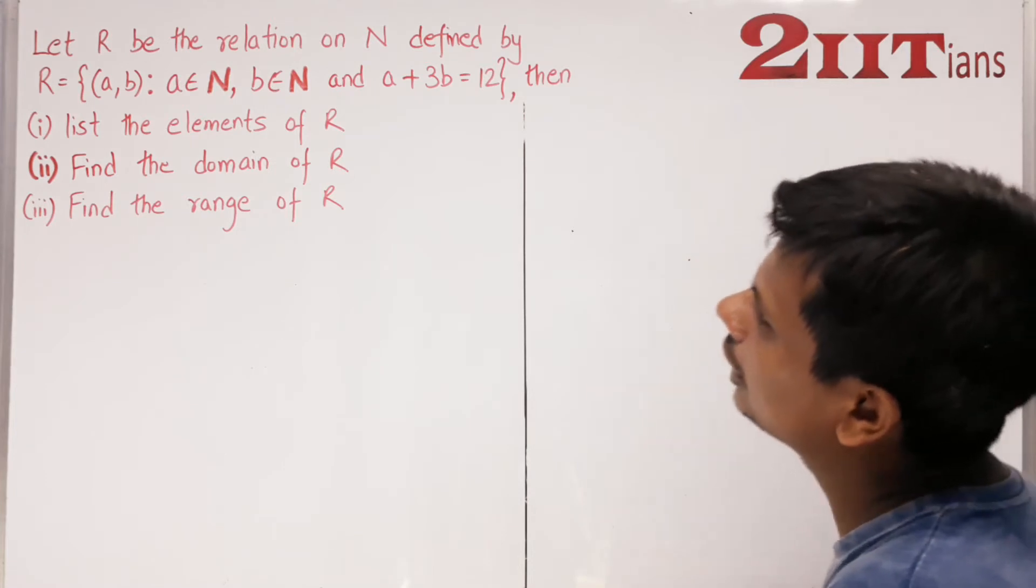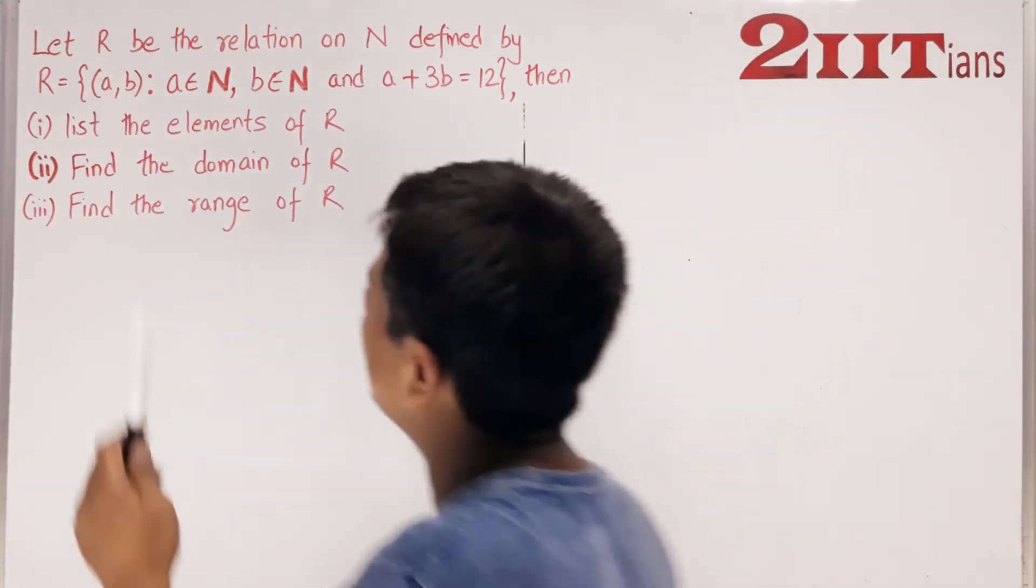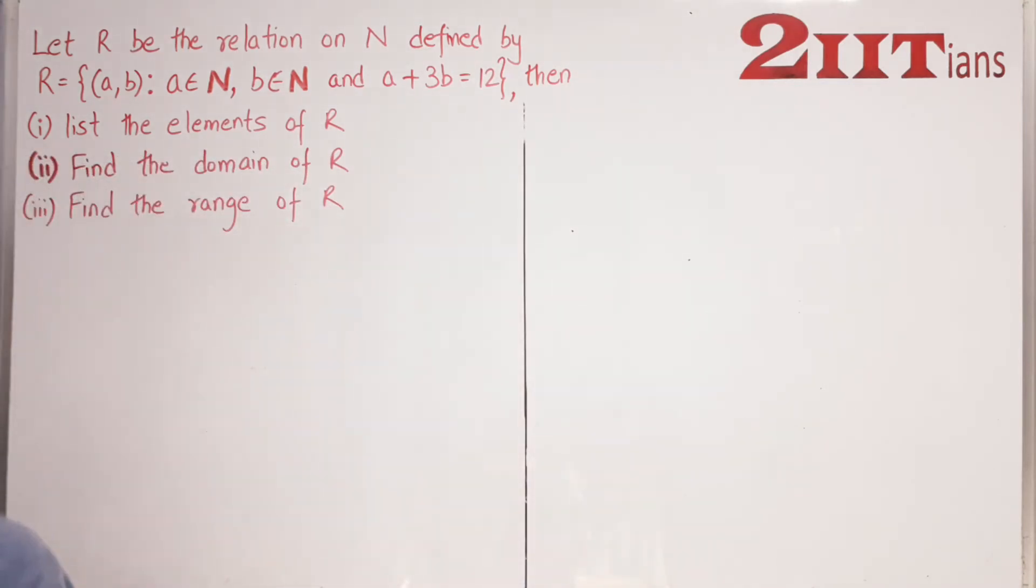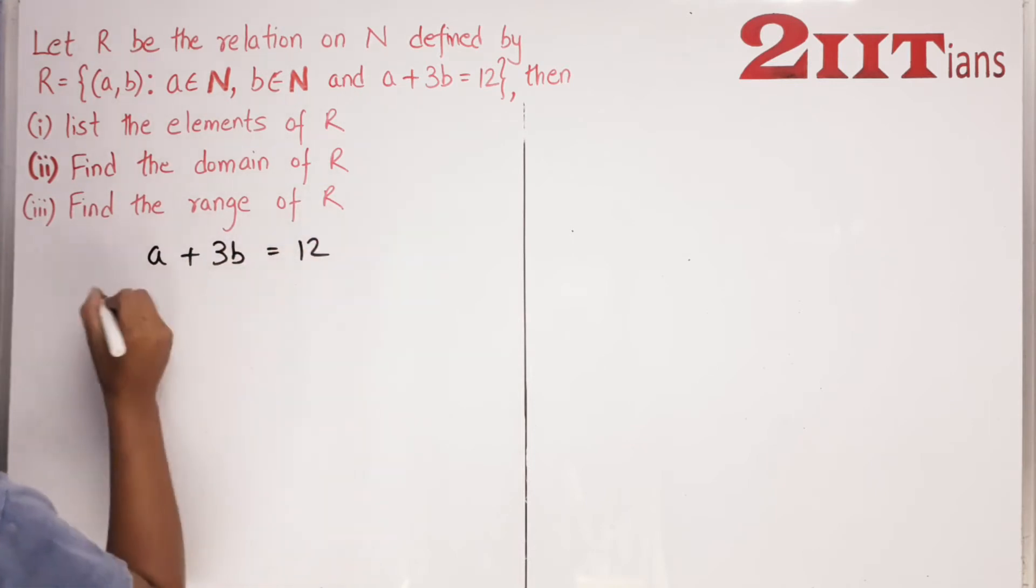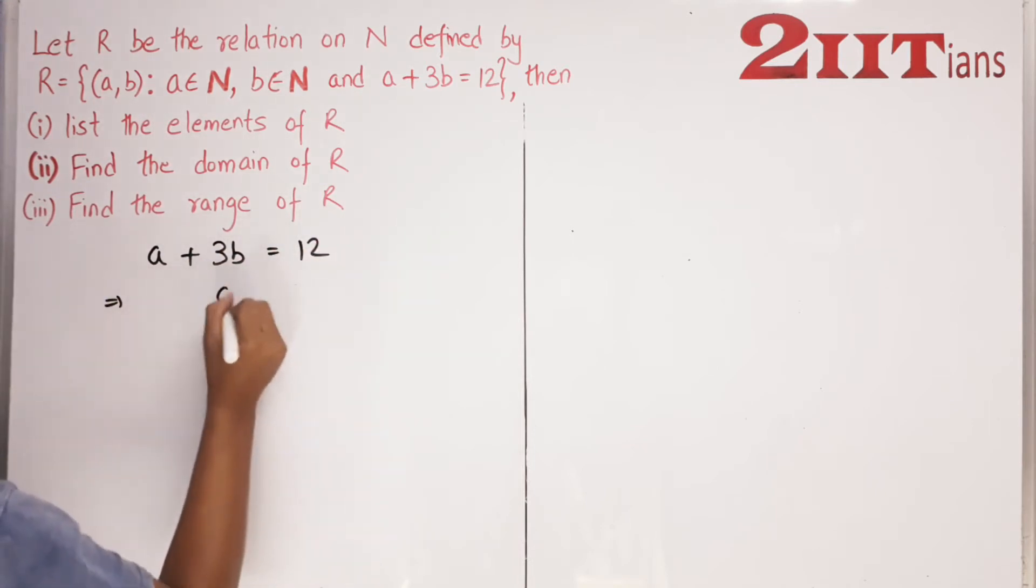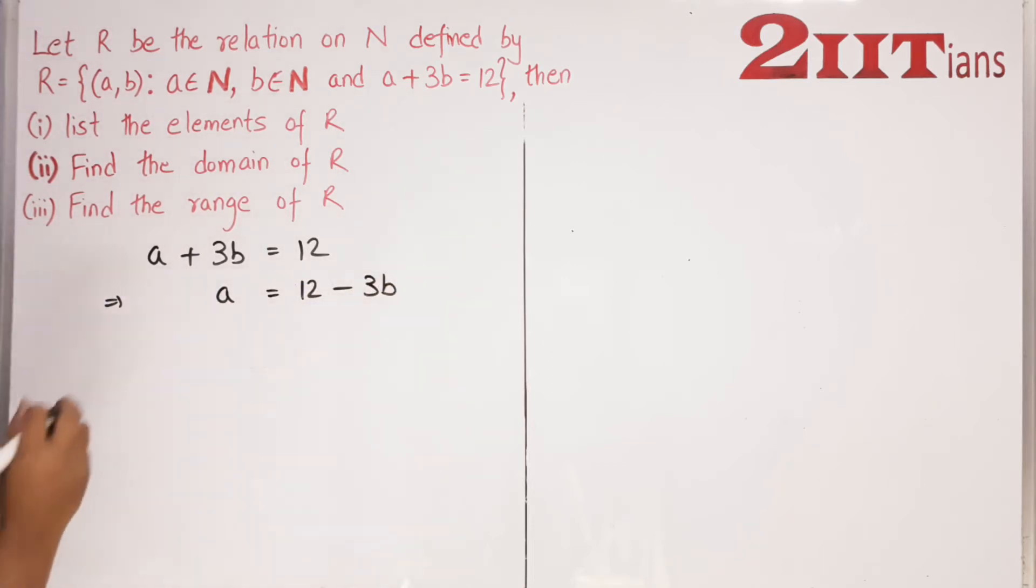To list the elements of R in roster form, we first see that a+3b=12. We can rearrange this: a=12-3b. We isolate both variables.